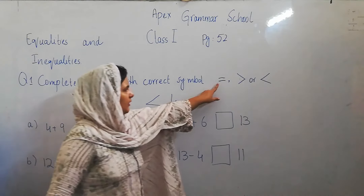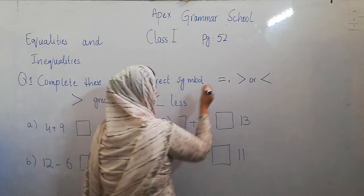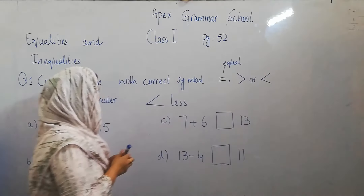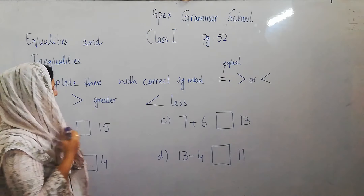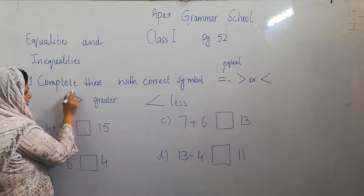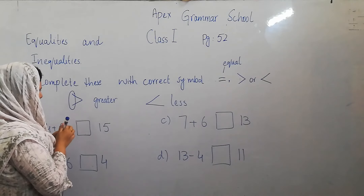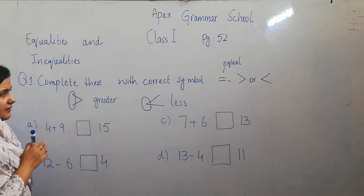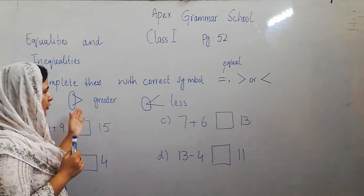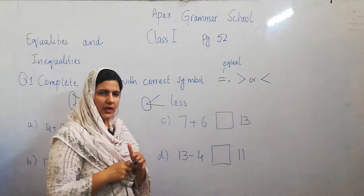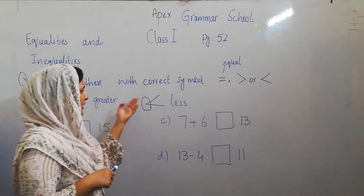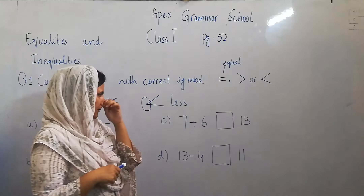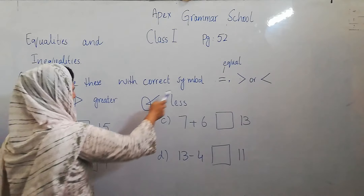This is the sign of equal. This is the sign of greater. Greater means: if the mouth is open on the left side, it means greater than. If the mouth is closed on the left side, it means less than. This is the sign of equal.